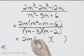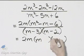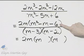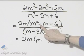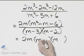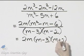And what am I looking for? m times m. This time, two factors of negative 6 whose sum is negative 1. That would be negative 3 and positive 2.